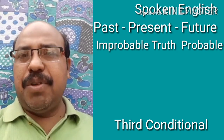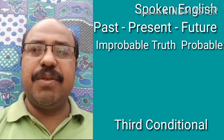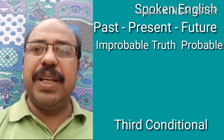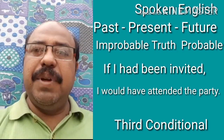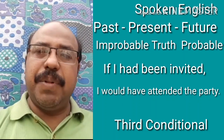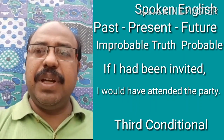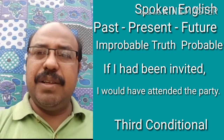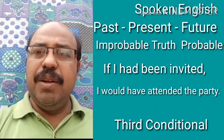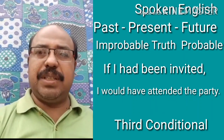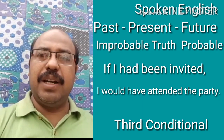When we talk about third conditional, it refers to something we cannot change under any condition — there is no probability, we are totally talking about hypothetical situations, how the past could have been different. For example: if I had been invited I would have attended the party. But unfortunately I was not invited and I didn't attend the party. So to express this total improbability we go to the furthest past, that is past perfect, which is used in third conditional sentences.